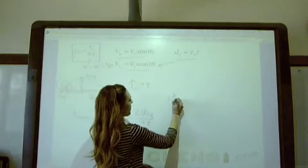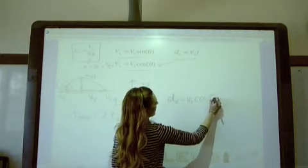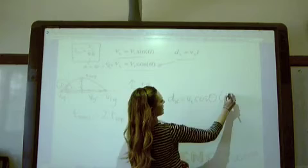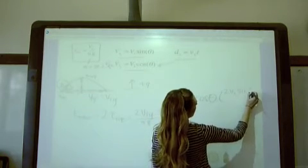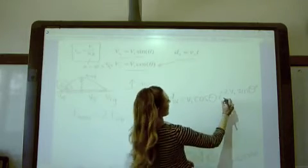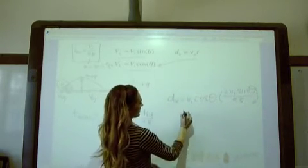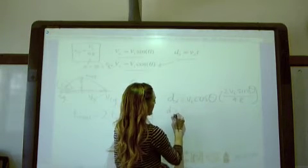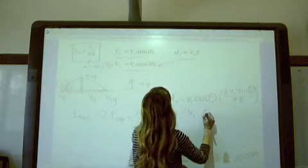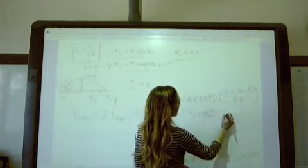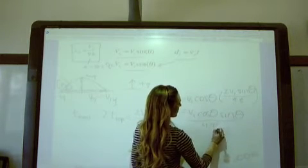So basically what we have now is that dx is equal to Vx, which we can just go ahead and plug in, Vi cosine theta. And then our time, which is going to be 2 times Viy, which I'm just going to go ahead and plug in, Vi sine theta, and that's over 9.8. So then just simplifying, we get that the displacement in the x direction is equal to the initial velocity times cosine theta times sine theta. And then all of that is just going to be divided by 4.9 by combining that 2.